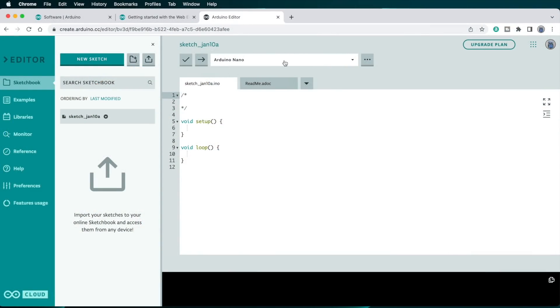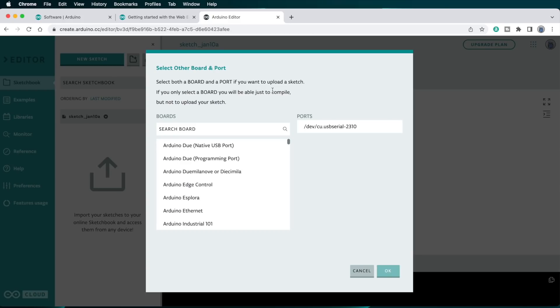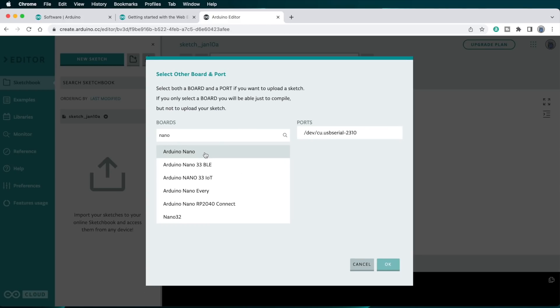I've already got mine configured for the Nano, but I'll go through it again real quick, so you can see what it looks like. There's a menu to select a board and port, so I'll click into that. Search the boards list for Nano, then select Arduino Nano from the list.